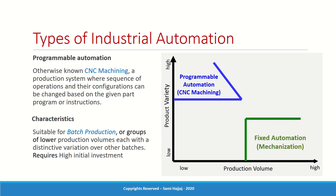Programmable automation equipment is also expensive, so it cannot be used for very small volume production — the volume must be considerably high, though not as high as fixed automation. This makes it suitable for batch production: when you have batch A and batch B — product A and product B — both produced on the same production line. For the first four hours you run program A, then the second four hours you run program B, yielding two distinct products.